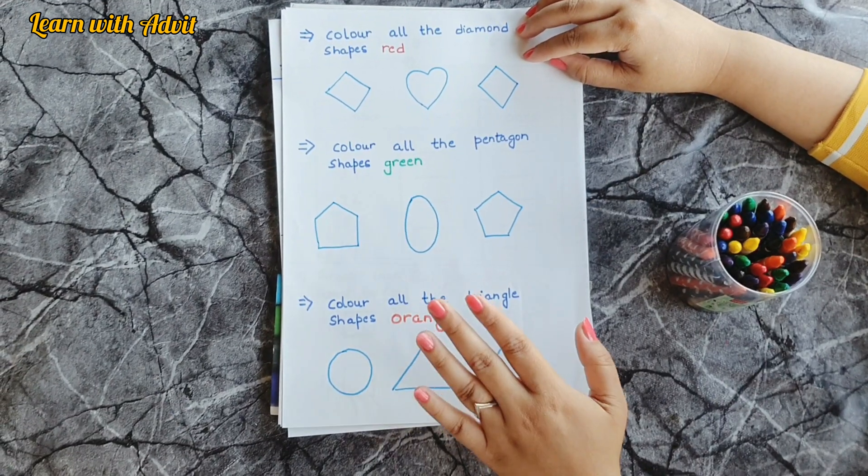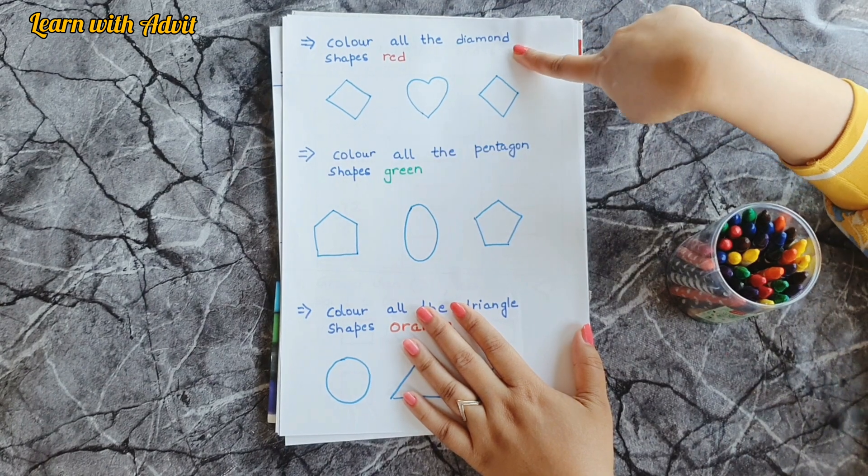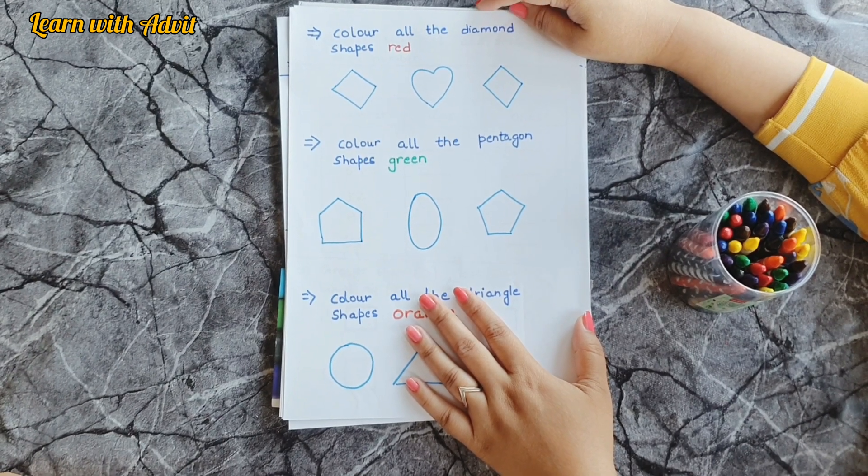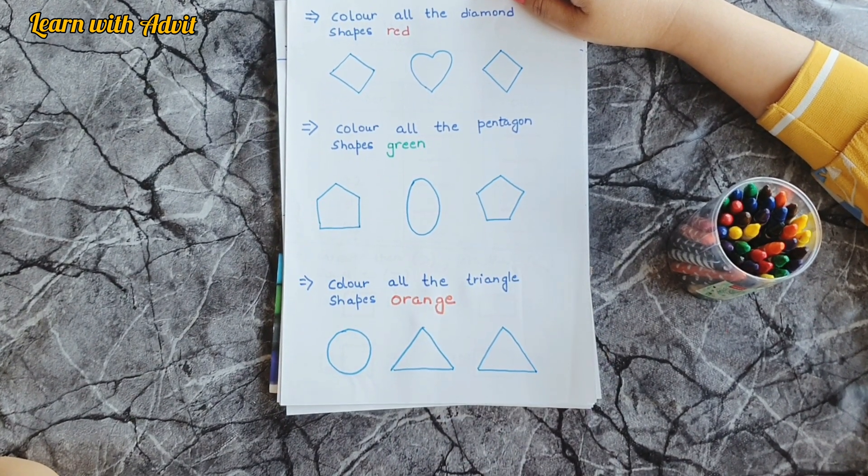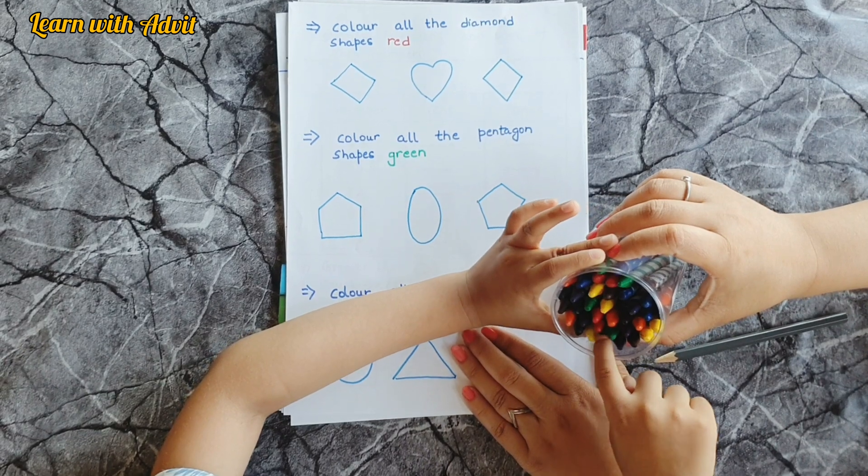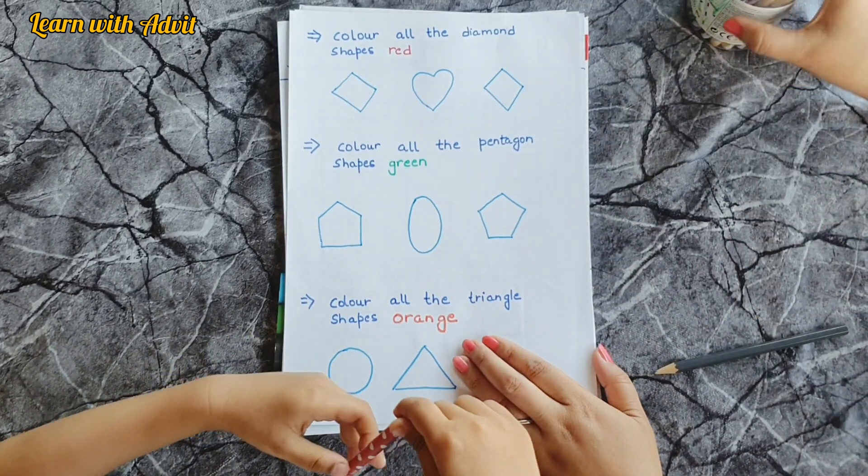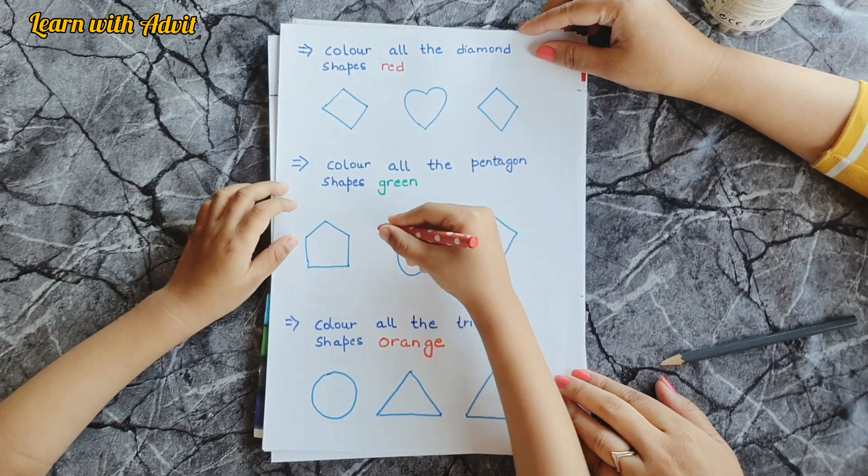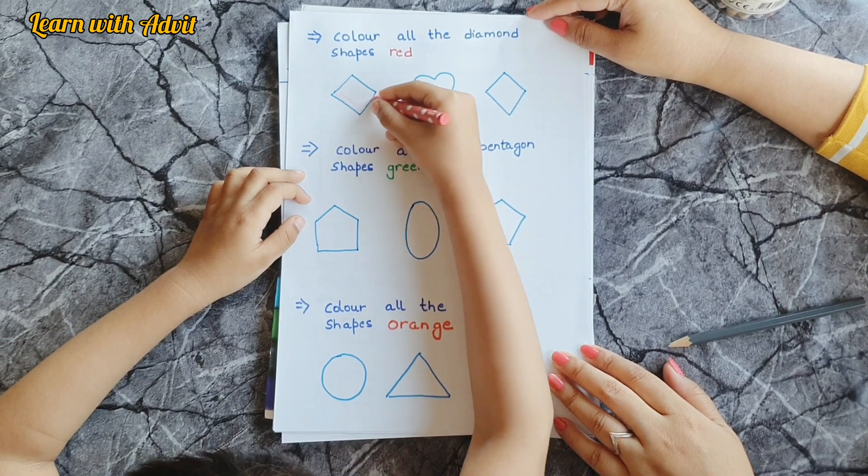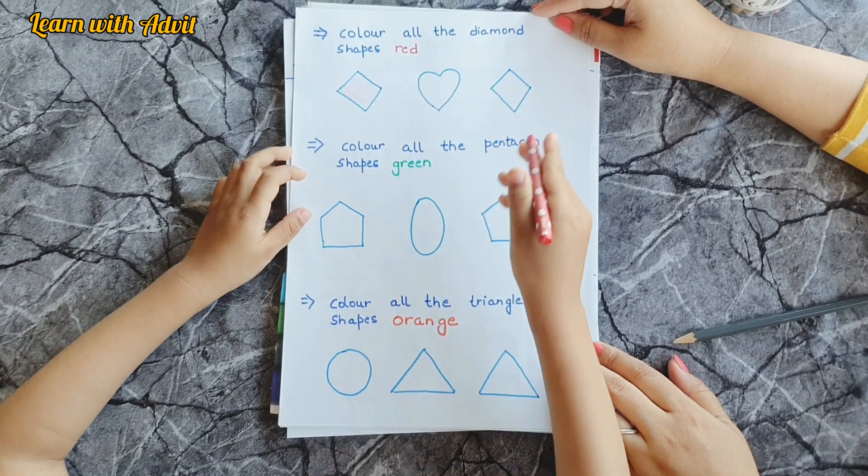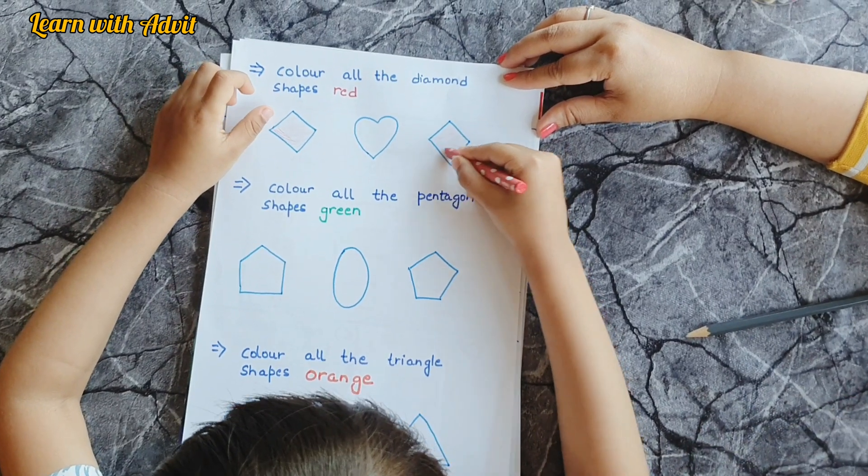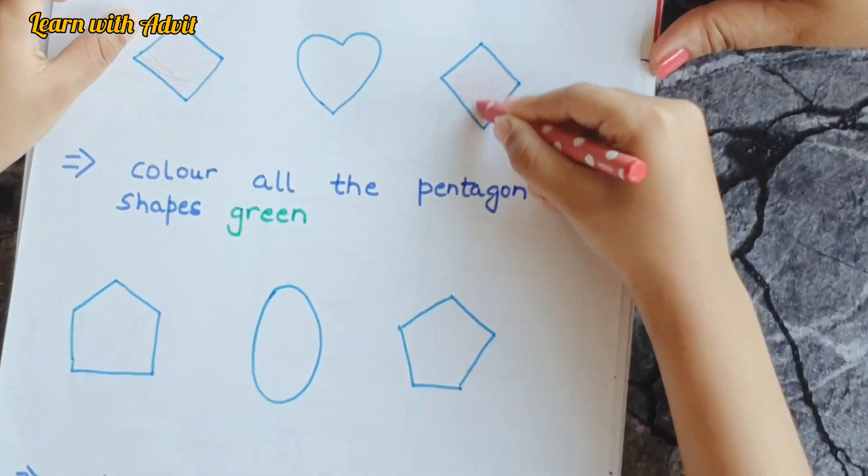This sheet is a shape worksheet. Color all the diamond shapes red. So tell me, how many diamonds are there? Two diamonds. So which color will you do? Red. Take out the red and do. It's my favorite red. All right. Can you do the other diamond?